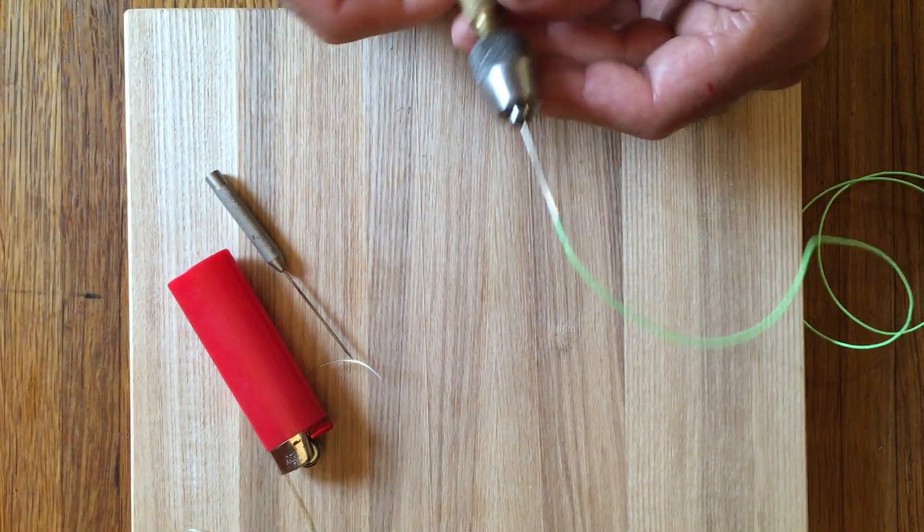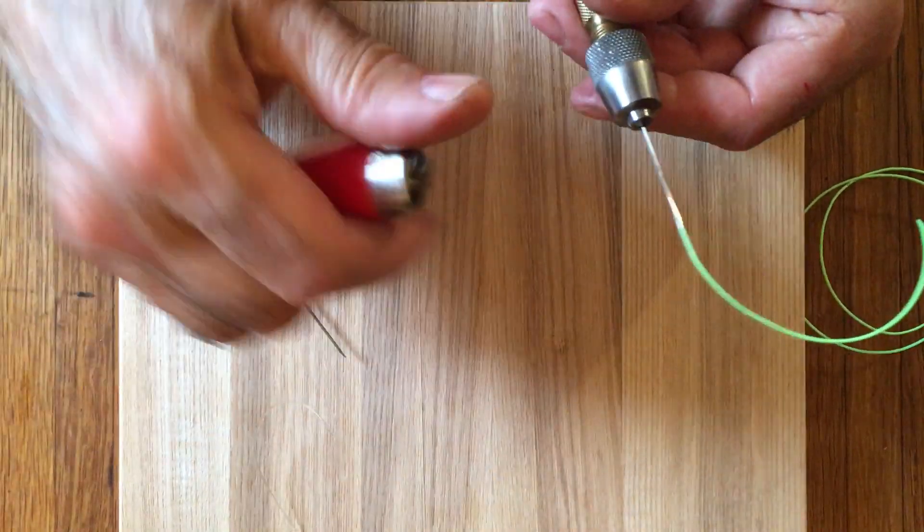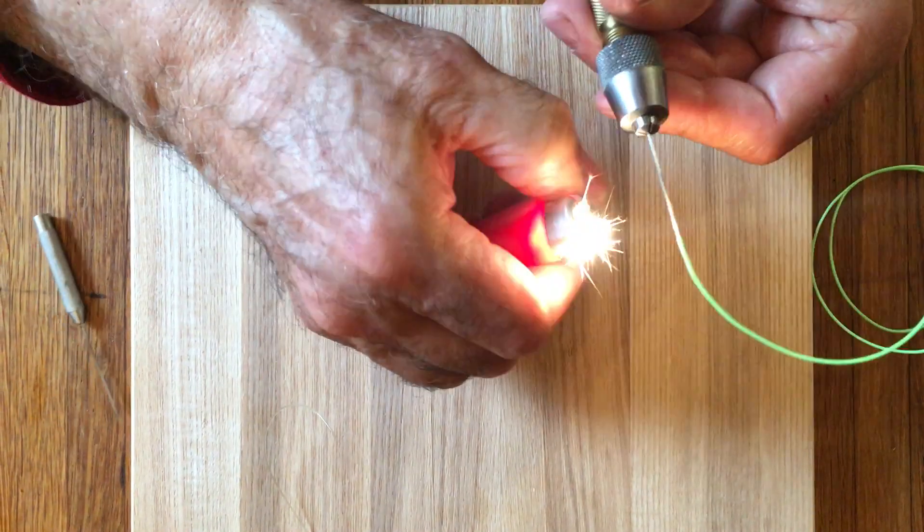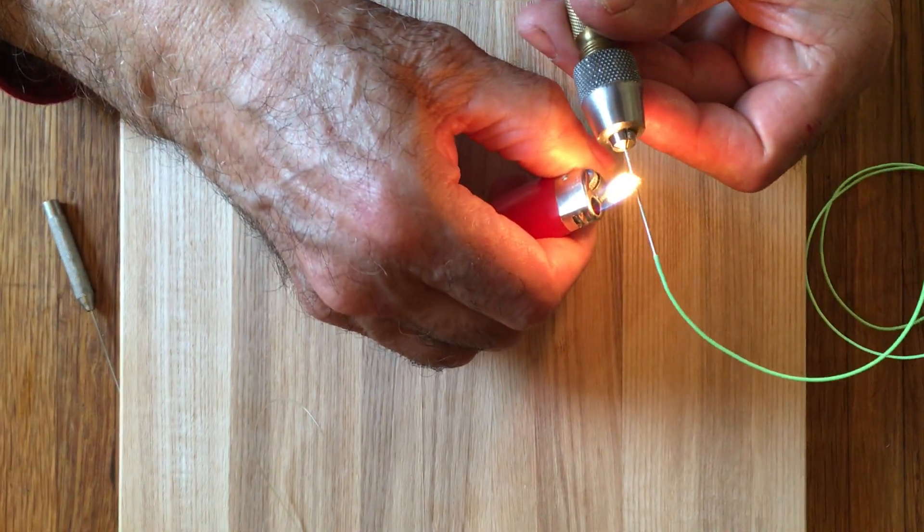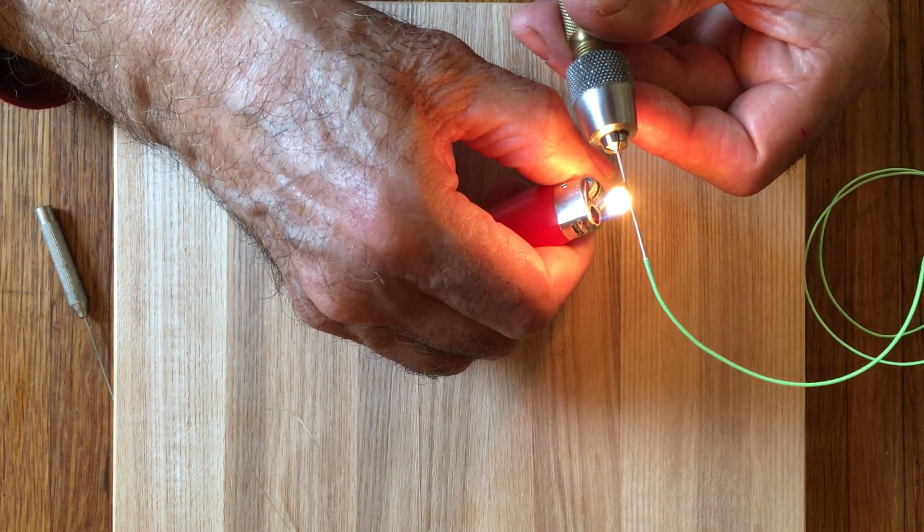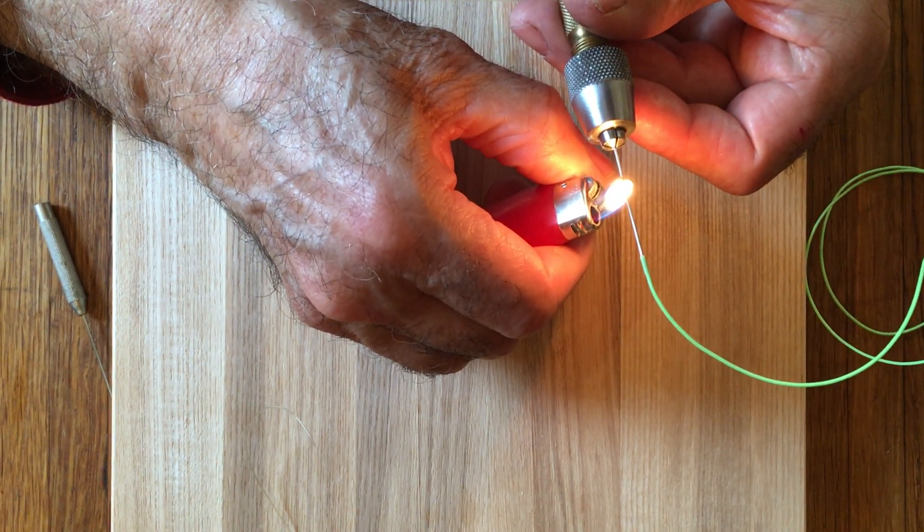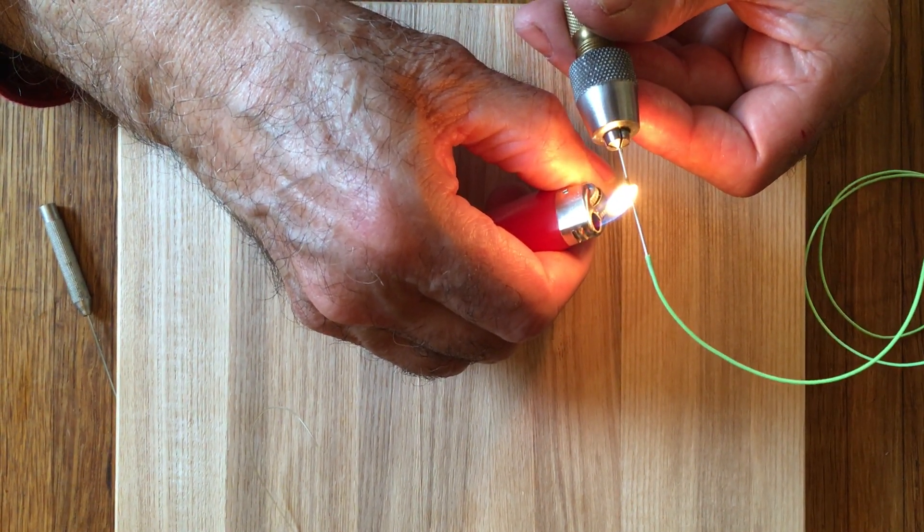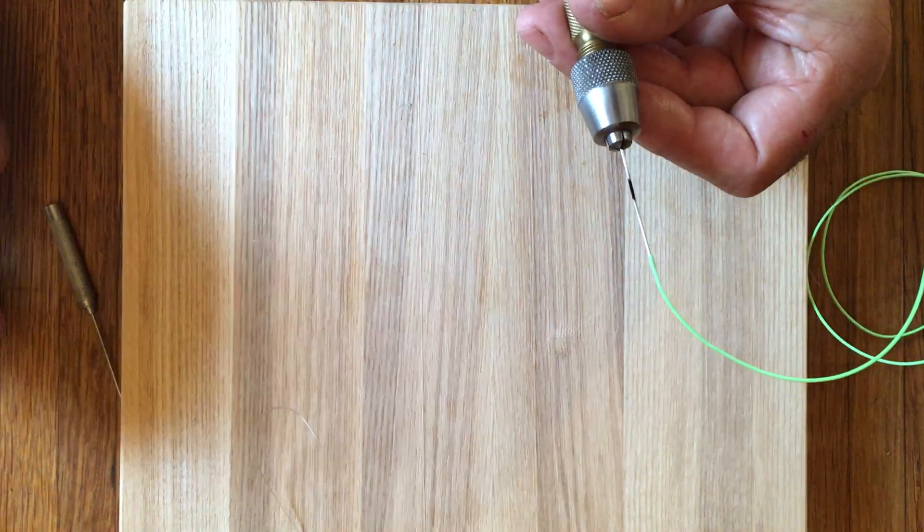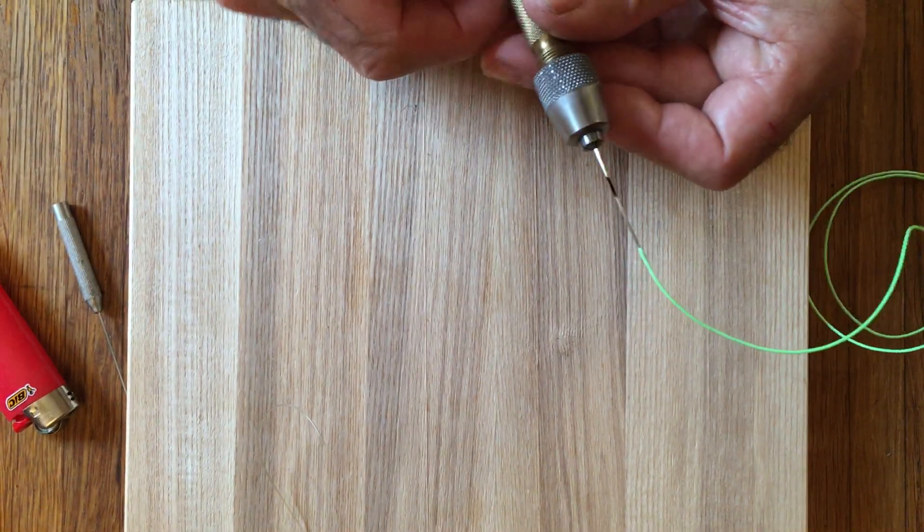Once it's inserted, with the lighter you heat the outside of the needle for about seven seconds and then you let it cool off.